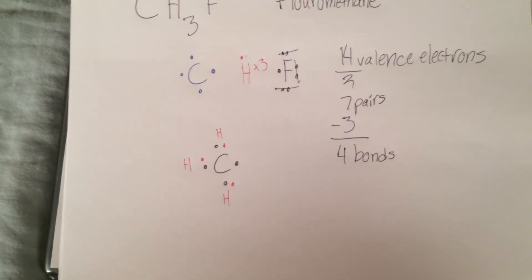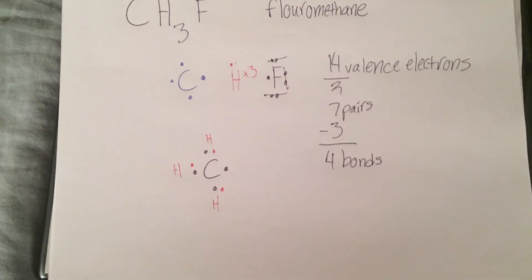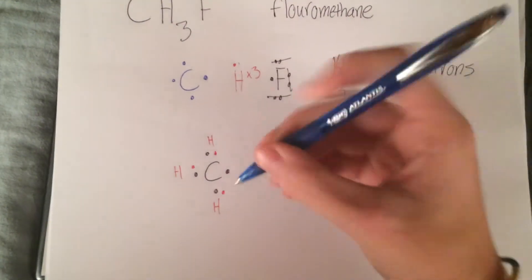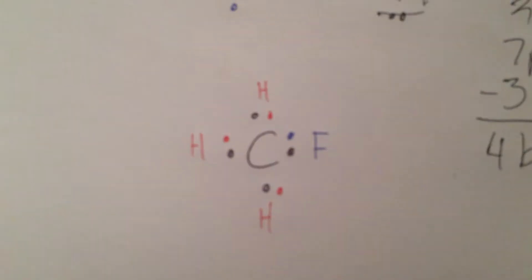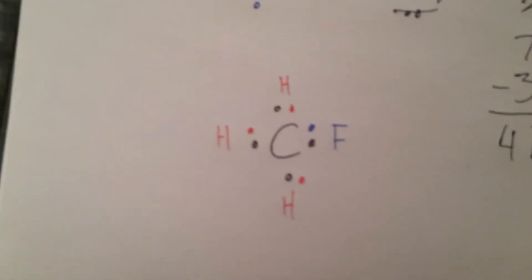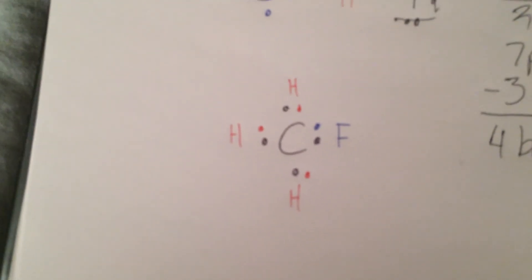Fluorine has one missing electron, and so does this carbon. This is the Lewis dot structure for fluoromethane, or CH3F.